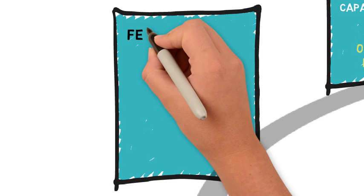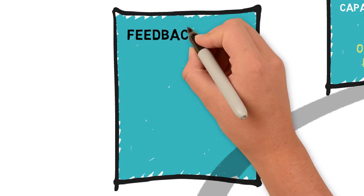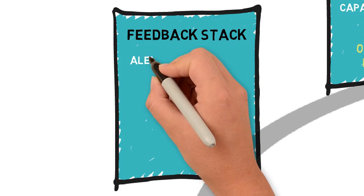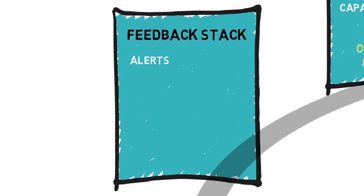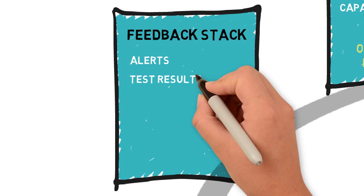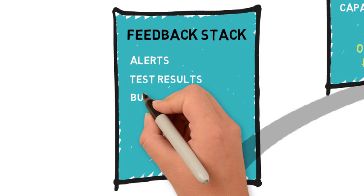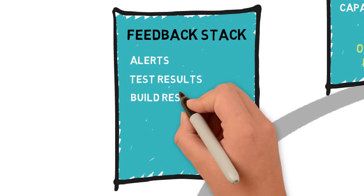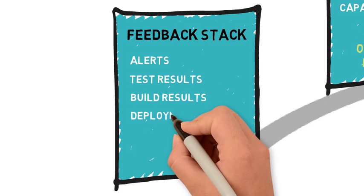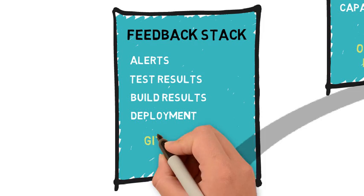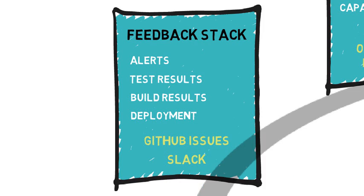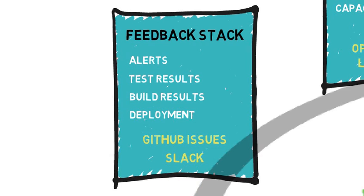Last but not least is the feedback stack, which provides automated feedback to the right people at the right time during all phases — alerting, auditing, test results, build results, deployment — touching all areas of the pipeline. GitHub Issues and Slack can be effective tools in this stage.